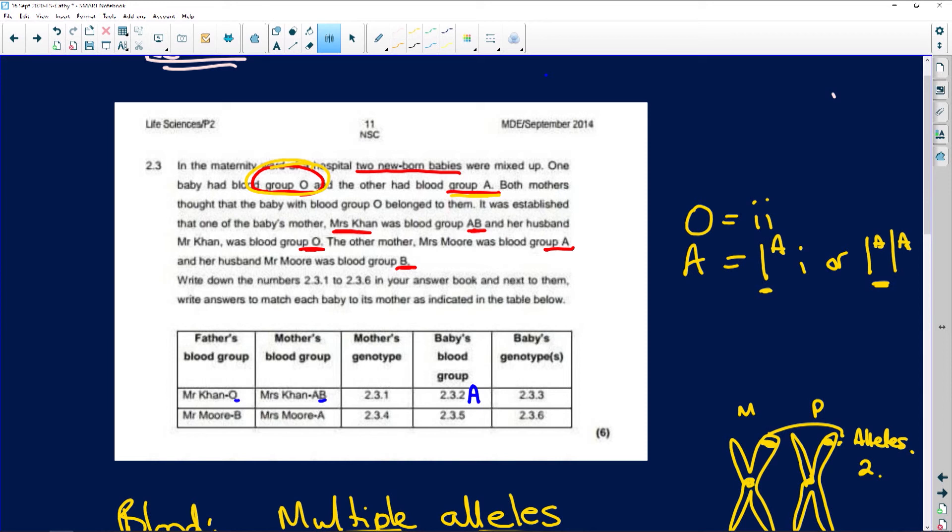And if the blood group is A, it means the baby's genotype is going to be IA i. It's going to be this one here. And which means the Muirs have the baby with blood group O, which means the baby's genotype is ii.